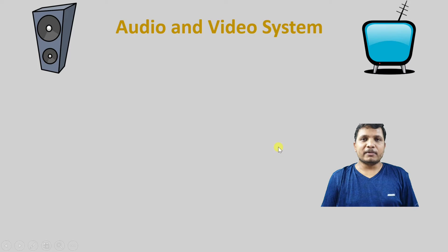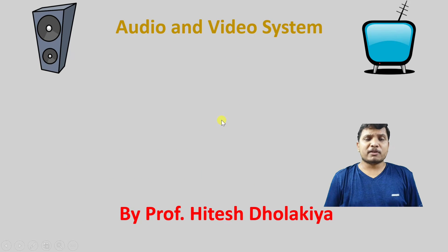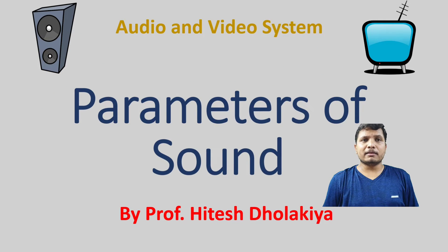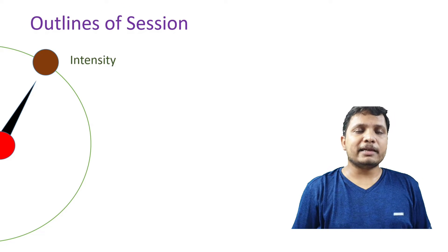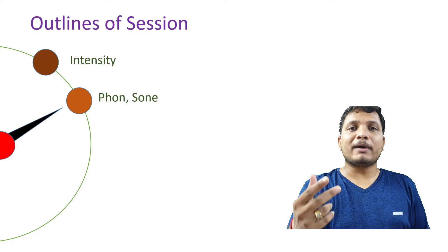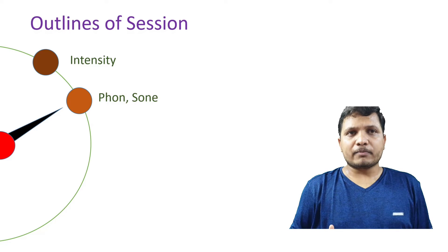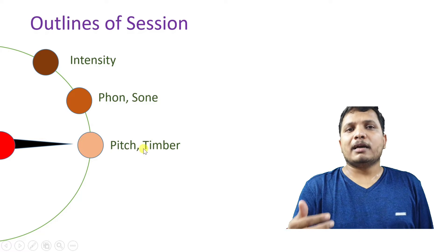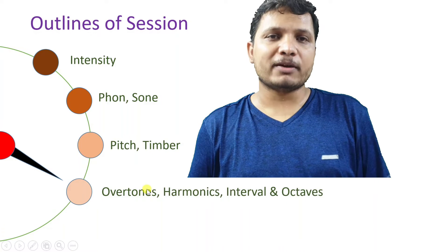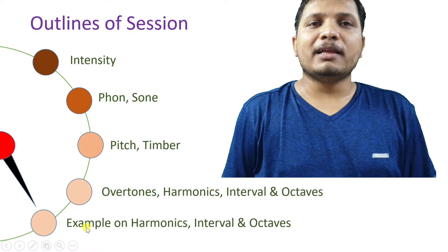Welcome to Audio Video System. In this session, I, Professor Hitesh Dolagya, am going to explain the parameters of sound. The session outlines are: first, intensity of sound; then two parameters based on intensity — phon and sone; followed by pitch and timbre of sound; and finally overtones, harmonics, interval, and octaves of sound, with worked examples.